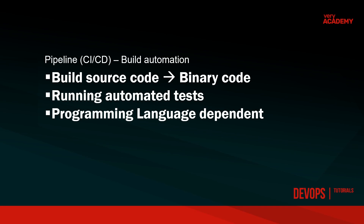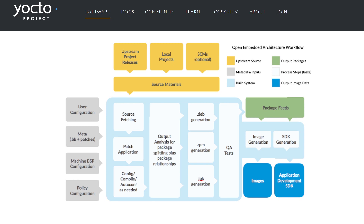A second part of our pipeline might be build automation — the process of building source code into binary code and running automated tests. This is programming language dependent; languages like JavaScript or PHP don't need to be compiled, so not every pipeline will have this step. There's plenty of different build automation software depending on what language you're using. One example is Yocto, which outlines the development process and is a fairly interesting read.